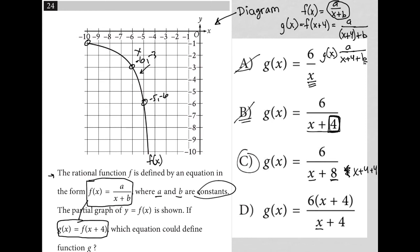And then choice d, I have x plus 4, but where's the b value? And then what is this x plus 4 doing up here? I don't have that in my equation here. In my equation here, I just have an a. I should just only have a constant in my numerator.